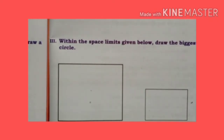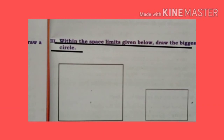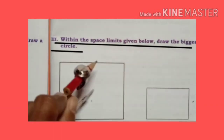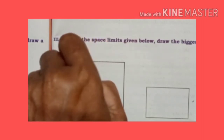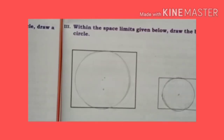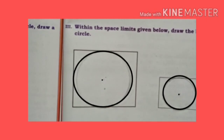Within the space limits given below, draw the biggest circle. Take a compass and make a circle. We get the circle. I hope you all have understood the circle.